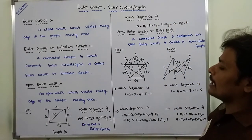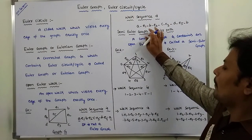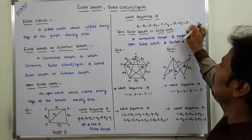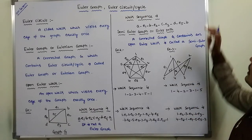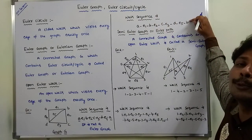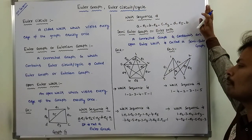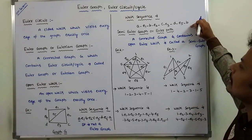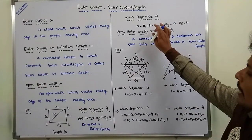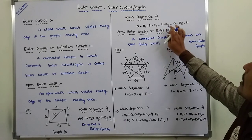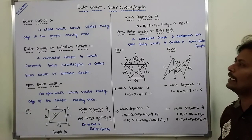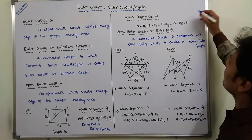Another walk sequence: A, E1, B, E2, C, E3, D, E5, and B. First, it is an open walk because the walk sequence starts and ends with two different vertices. But it does not cover all the edges — E1, E2, E3, E5 are visited, but E4 is not visited, so it is not a Euler graph.